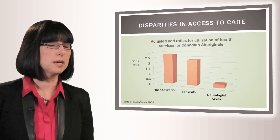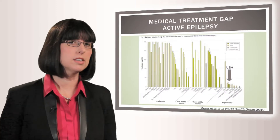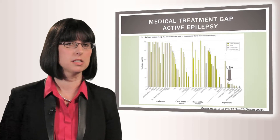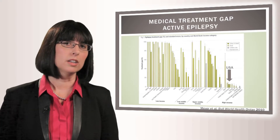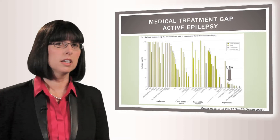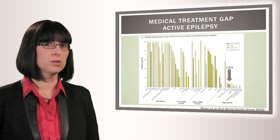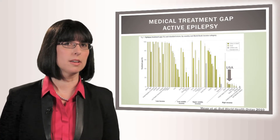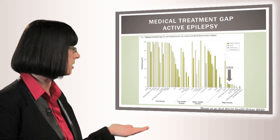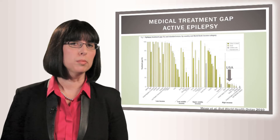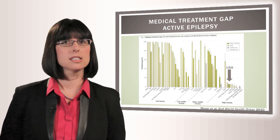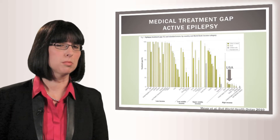Now let's talk about the treatment gap. These are data from a systematic review examining population-based studies addressing the epilepsy treatment gap, looking at studies published between 1987 and 2007. Here we see the treatment gap for those studies which examine patients with active epilepsy. There is great variation between countries and also within countries, with a reported treatment gap of around 10% in rural USA, being slightly lower in urban USA at around 6–7%.